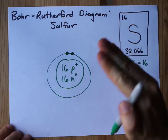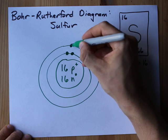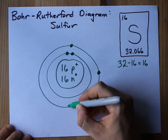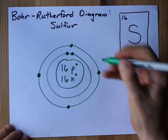Now the second shell can hold up to eight, so I'm going to draw my second shell, and I'm going to put one, two, three, four. Please note I'm doing four singles before I double any up, it's just good form.